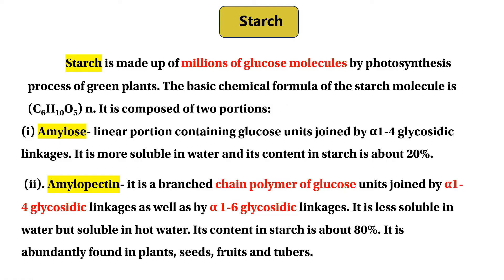Starch is abundantly found in plants, seeds, fruits, and tubers. Amylopectin is less soluble than amylose in water.